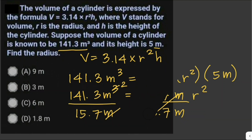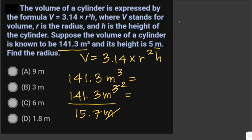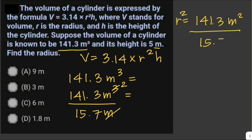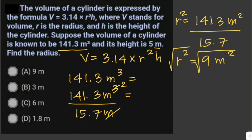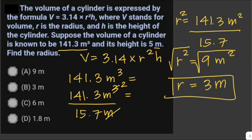Now R squared equals 141.3 over 15.7 square meters. You can use long division to divide 141.3 by 15.7 — the answer is equal to 9 square meters. To solve for the radius, we take the square root of both sides. The square root of 9 is 3. Therefore, the radius equals 3 meters, which is letter B.